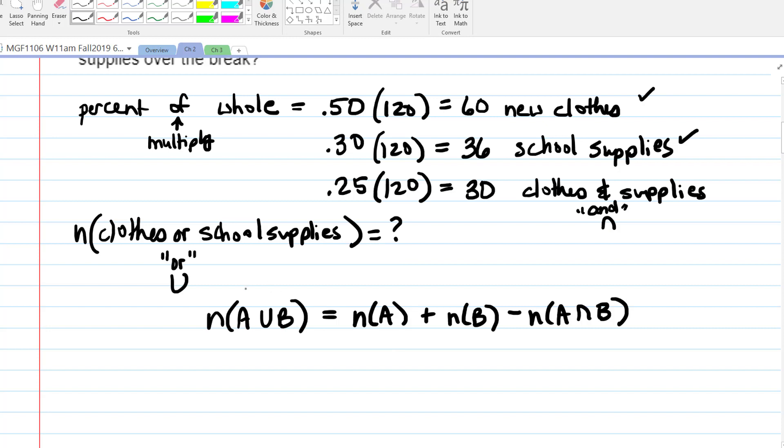So we're trying to find the number that are clothes or school supplies. So let's say that clothes is set A, school supplies is set B. So clothes and school supplies would be A intersect B. And then clothes or school supplies would be A union B. We're looking for A union B, but we know the rest. How many are in set A? Clothes. 60. How many are in set B? 36. And then minus, how many are in the intersection? 30. And so it means that the number in A union B is what? 66. And that answers the question.